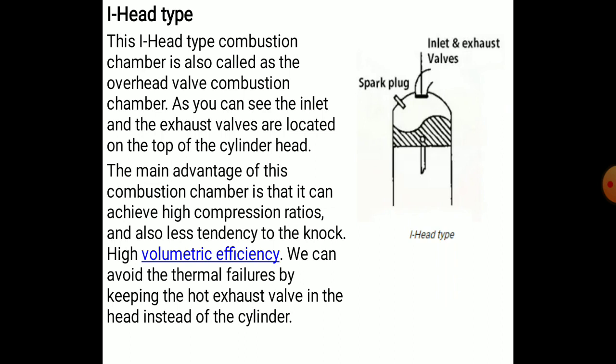The I-headed type combustion chamber is also called the overhead valve combustion chamber. The inlet and exhaust valves are located on top of the cylinder head. The main advantages of this type include achieving a high compression ratio, less tendency to knock, and high volumetric efficiency. Thermal failures can also be avoided by keeping the hot exhaust valve in the head instead of the cylinder.